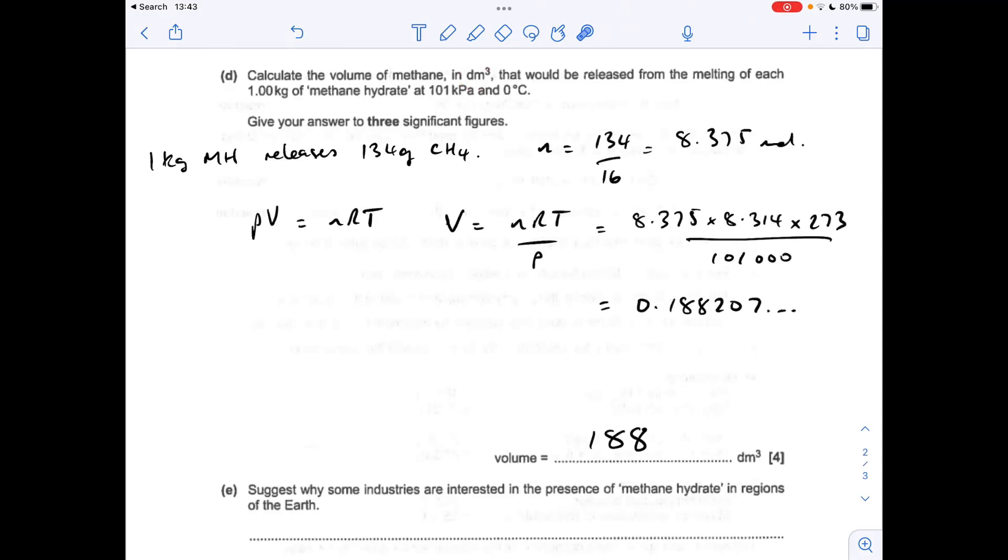So I'll quickly go through this. The moles of methane came out at 8.375, mass over MR. Ideal gas equation, rearrange for V, and then we put the numbers in and just be careful with your conversions. So 0 degrees C is 273 Kelvin, 101 kilopascals is 101,000 pascals. So this number here, the 0.188207 calculator value, that's in meters cubed but they want it in decimeters cubed so we multiply by a thousand to get 188.